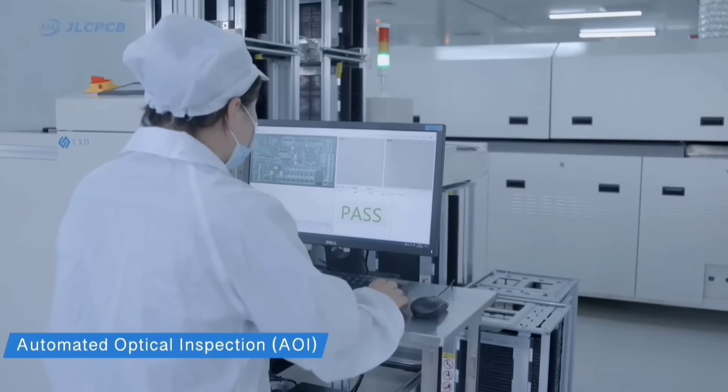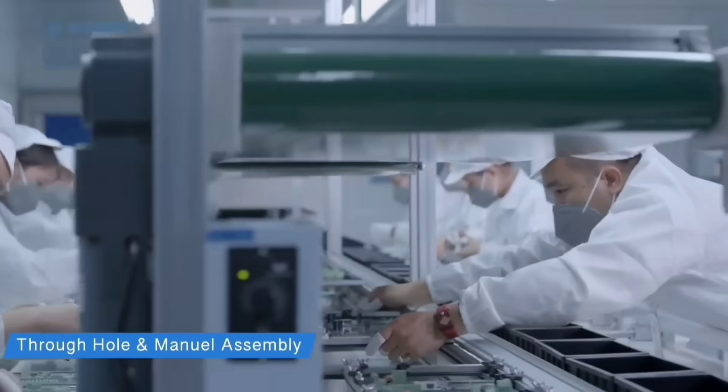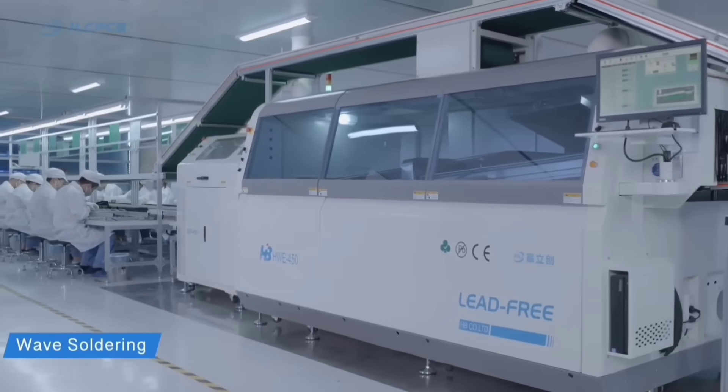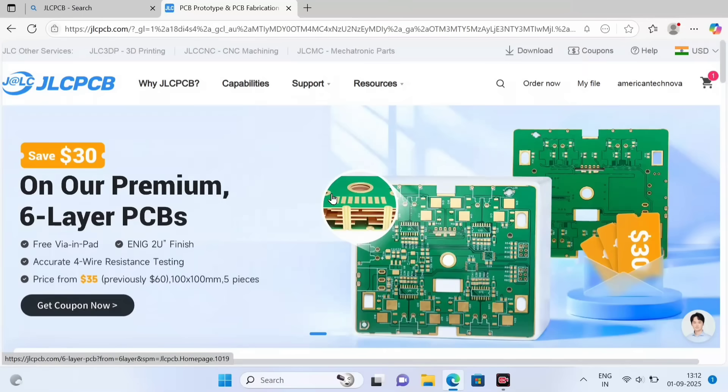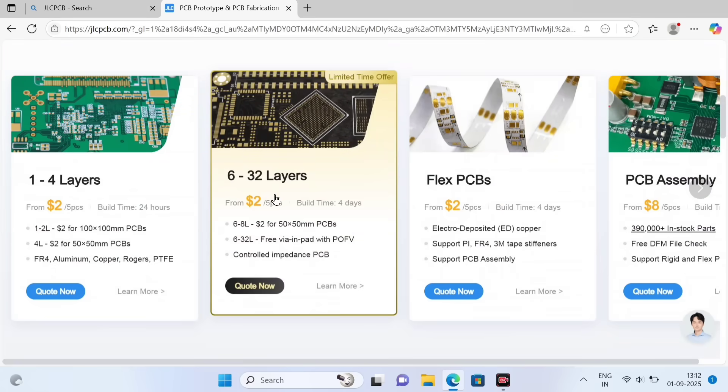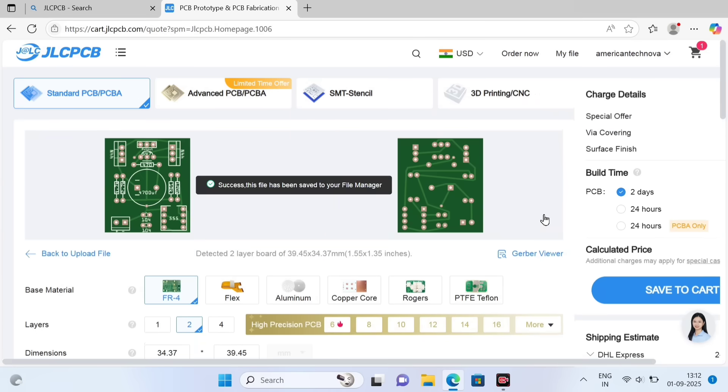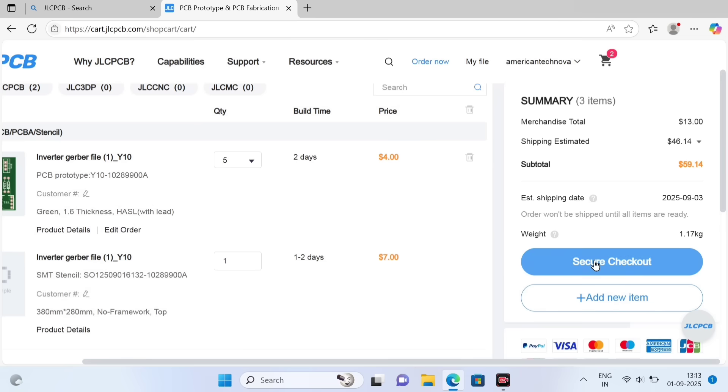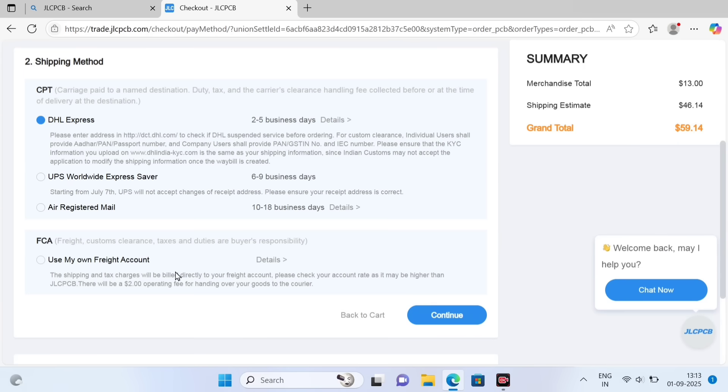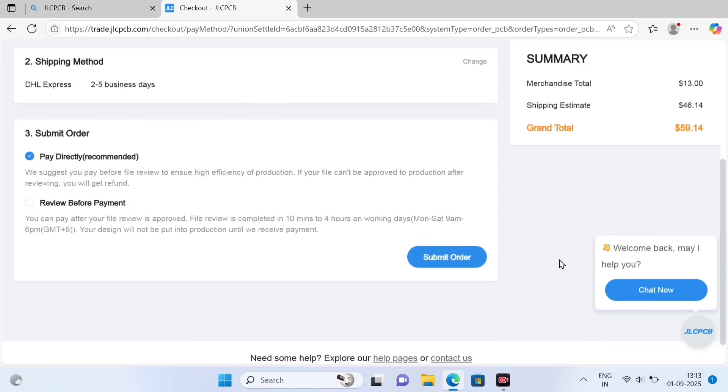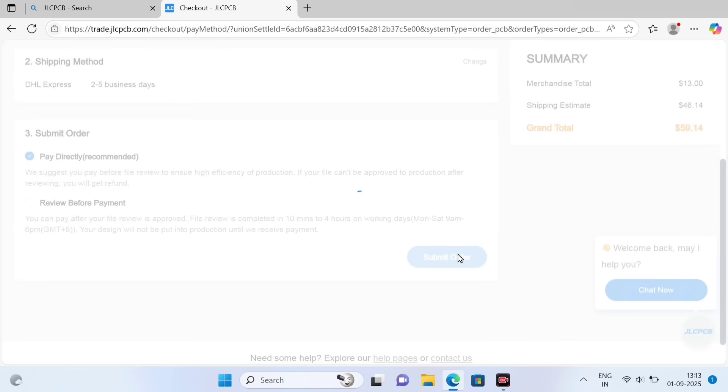JLCPCB also establishes a well-trained engineer's customer support team which is very handy and helpful. Ordering SMT service is quite easy at jlcpcb.com. First, you need to upload the Gerber file. Turn on the SMT assembly button and confirm. Go next and check out with preferred shipping method. If you want to order SMT service with high quality and low cost, check the link in the description below.